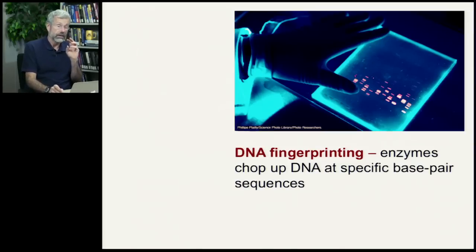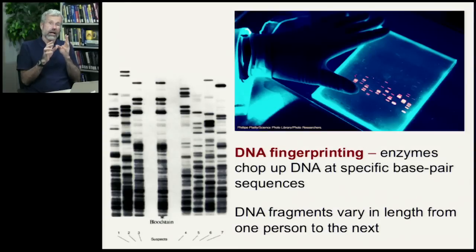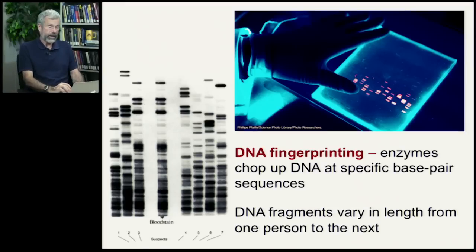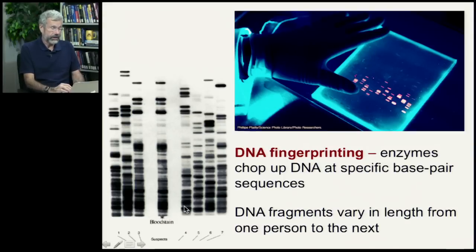When lab technicians run a DNA fingerprint, they take a sample of DNA from a specimen — whether it's blood or hair — and use specific enzymes that look for certain sites along the GATC sequences of the chromosomes in the sample, and they chop them up. Where those sites are found along the chromosome are slightly different in every individual on Earth. Those fragments are then run on a gel using a process called electrophoresis: fragments with the heaviest molecular weight don't travel very far in the gel, while the smallest fragments travel furthest.